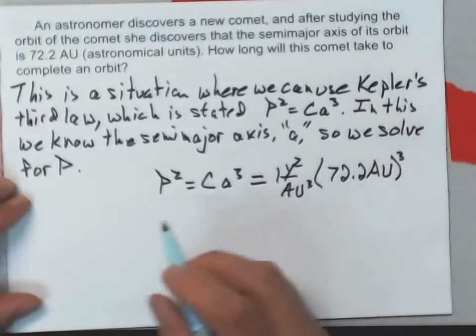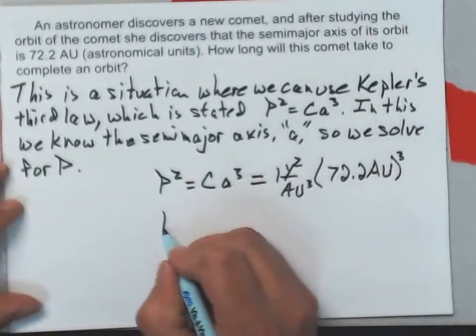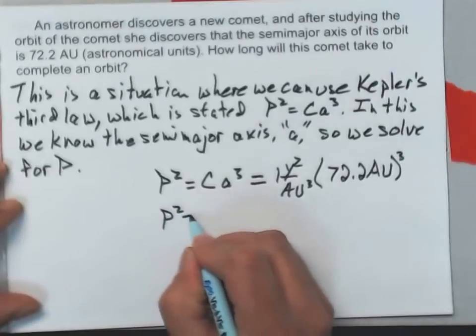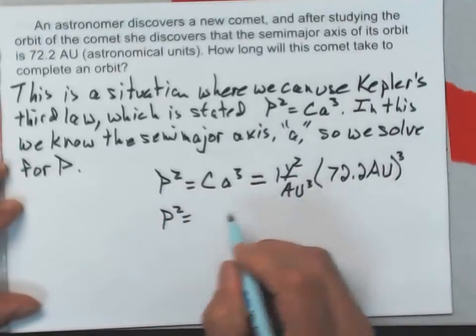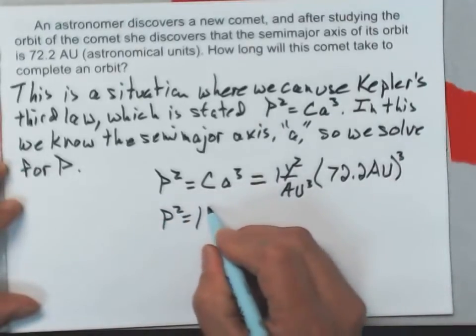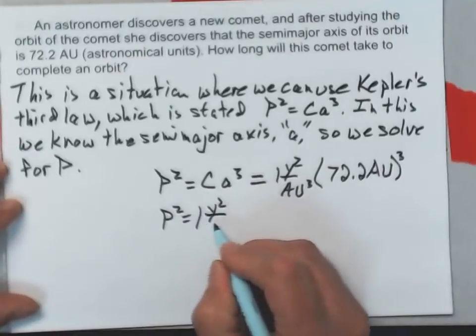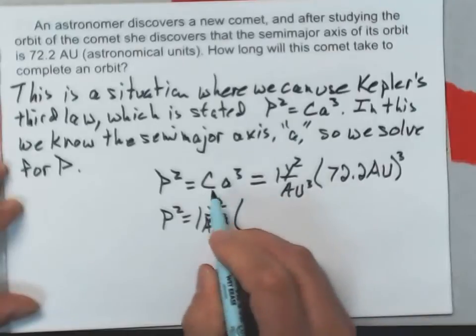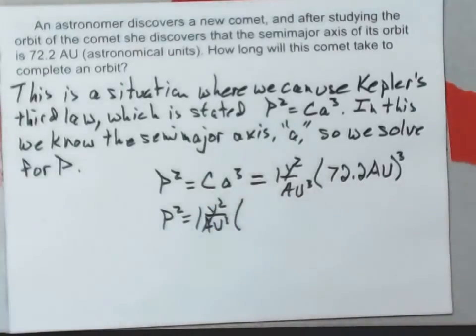Now I'd go ahead and do a little bit of math on my calculator. P squared equals, well first I'll rewrite that C, one year squared per AU cubed, that's the value of C.